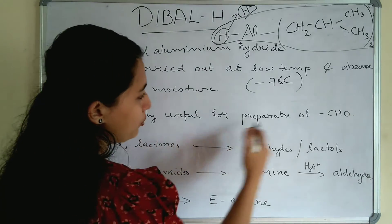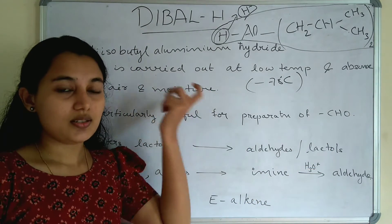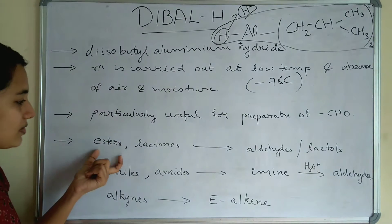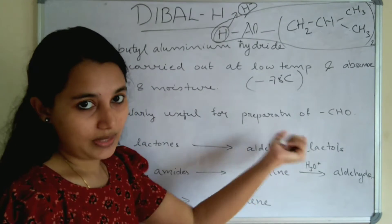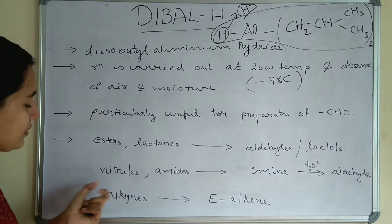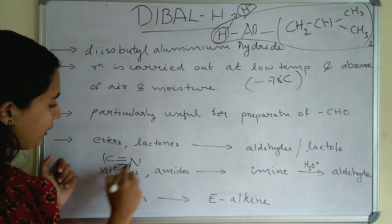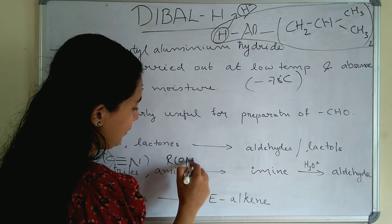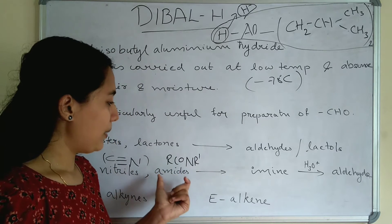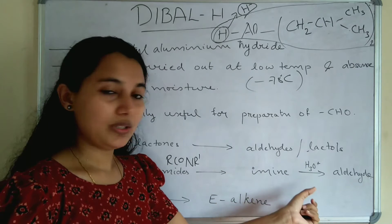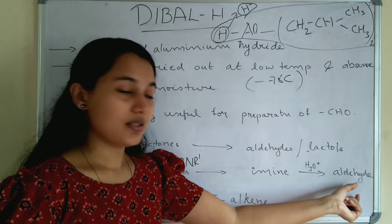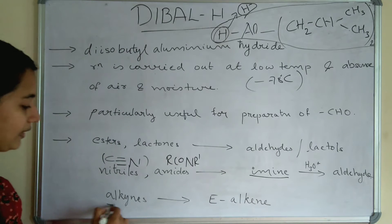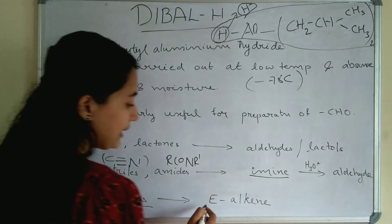DIBAL-H is particularly useful for the preparation of aldehydes. Esters and lactones are converted to aldehydes or lactols. Nitriles and amides are also substrates — amides are converted to imine, and when hydrolysis takes place it is further converted to aldehyde. So first it is converted to imine, and then alkynes can be converted to E and Z alkenes.